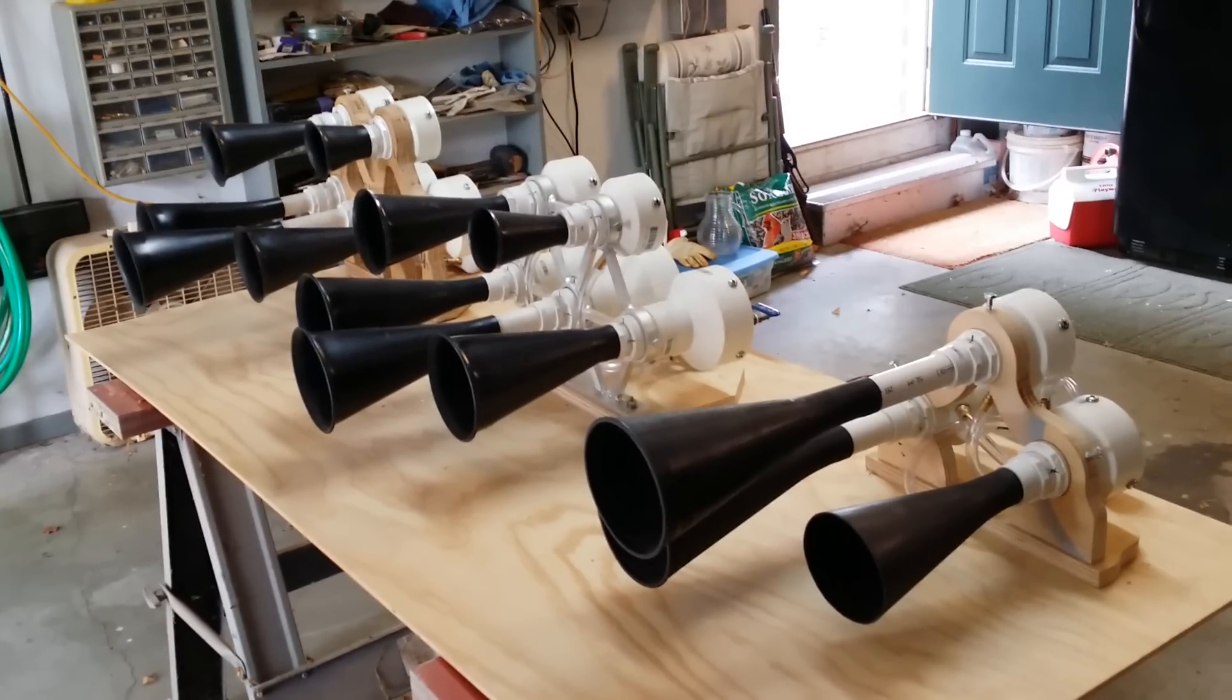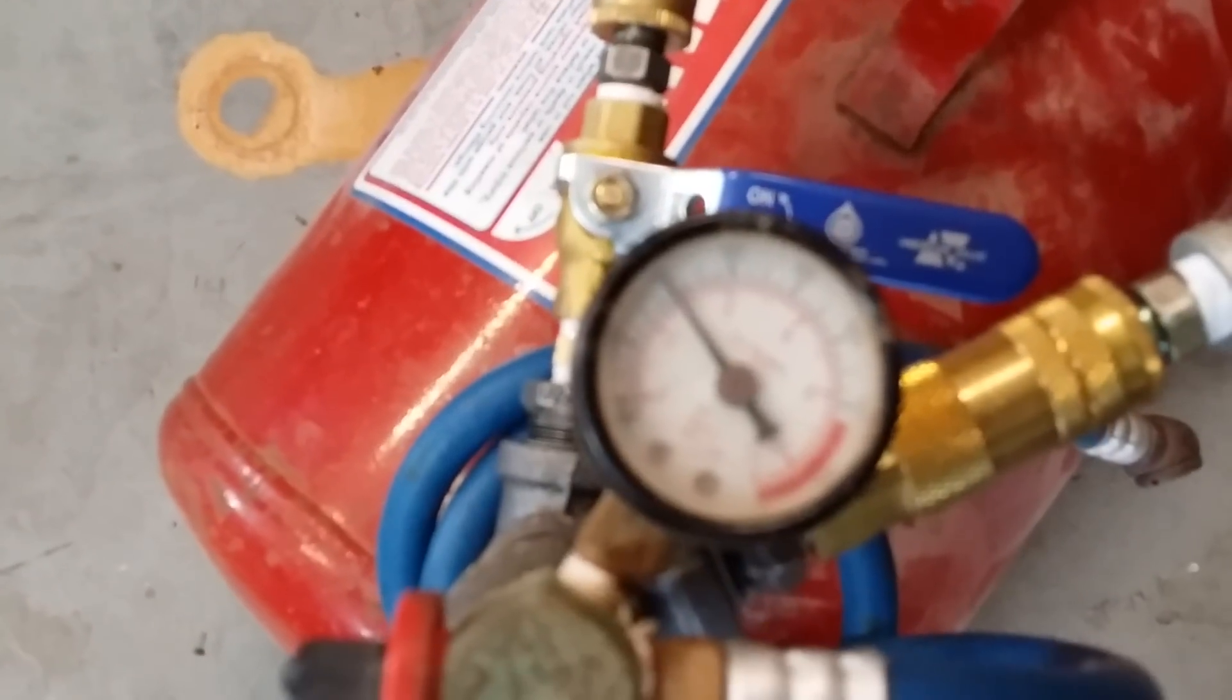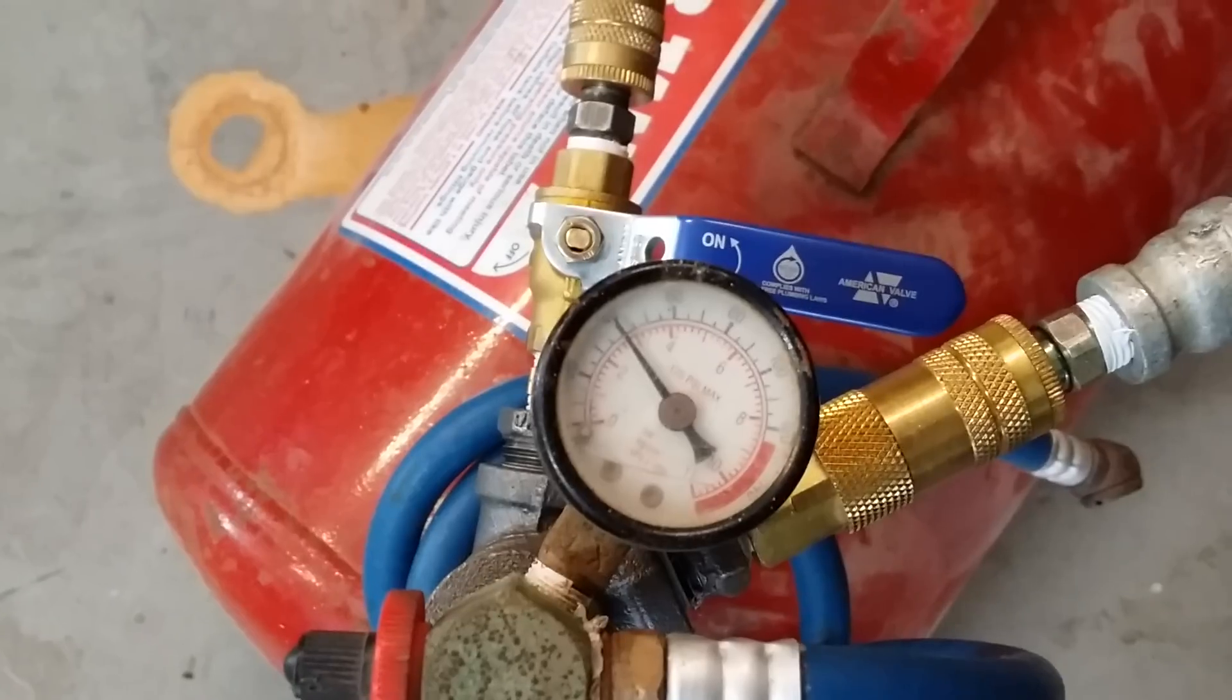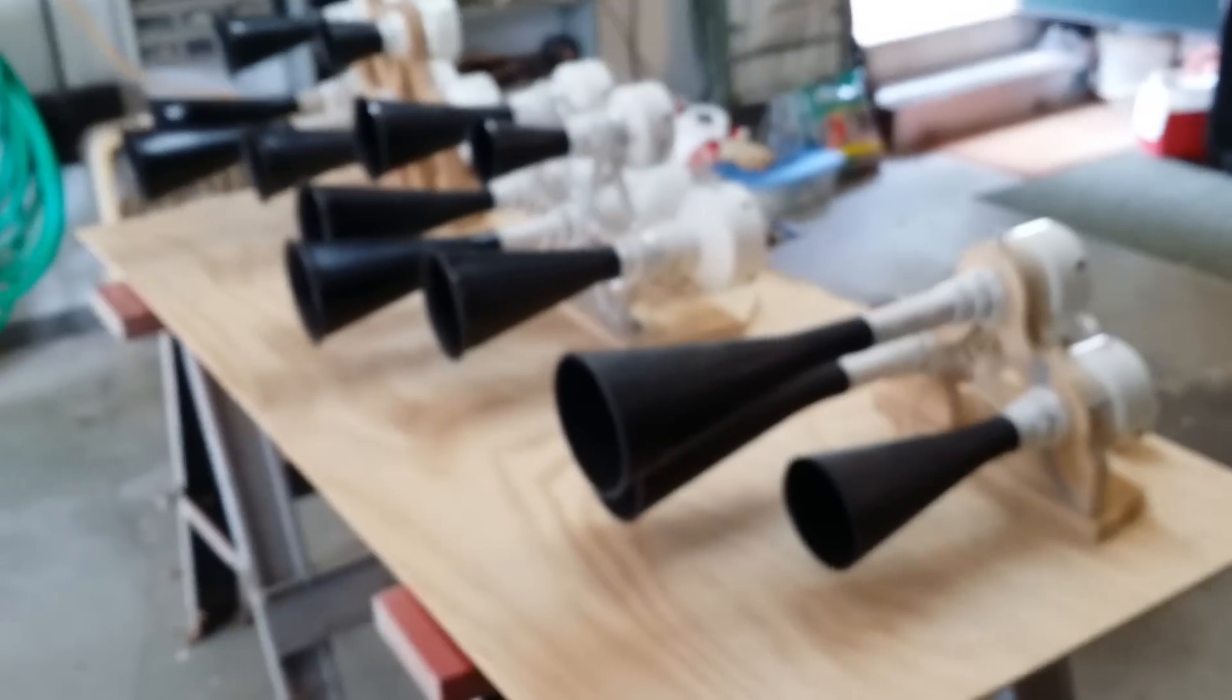We're going to bark these horns at 40 pounds. I'll show you the rig here - you can see it's set to 40 pounds. We're going to pause after every bark because we don't want the air compressor to pop back on.